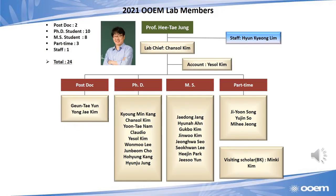This is our OEM lab members. Our professor is Hite Chang and there are 24 students in our lab. There are two post-doc students, 10 PhD students, and 8 master students. Also, there are three part-time students who work outside KAIST and one staff member.